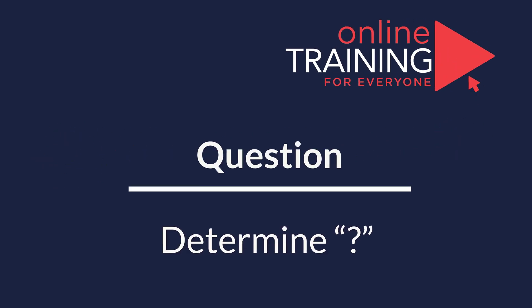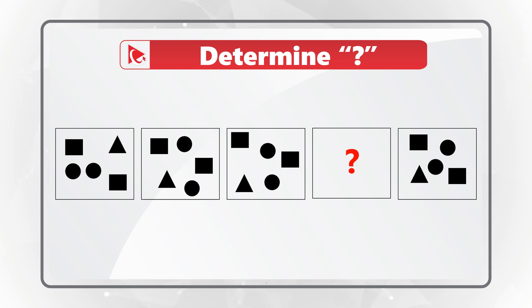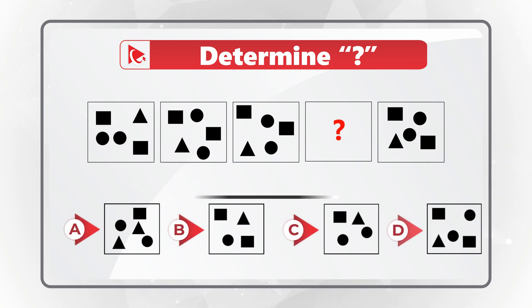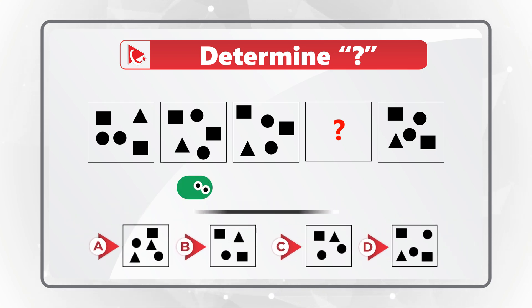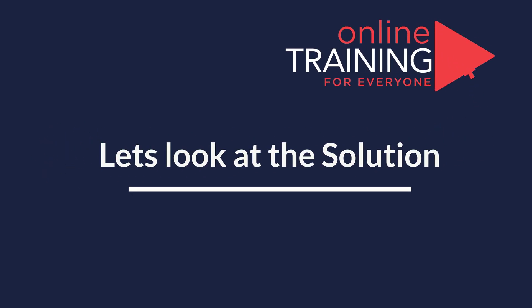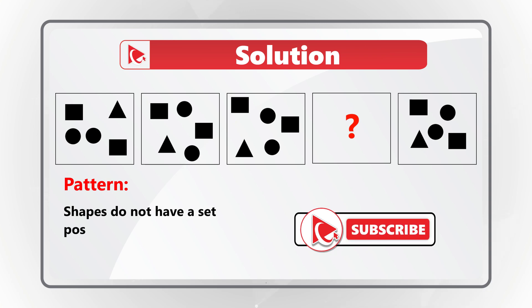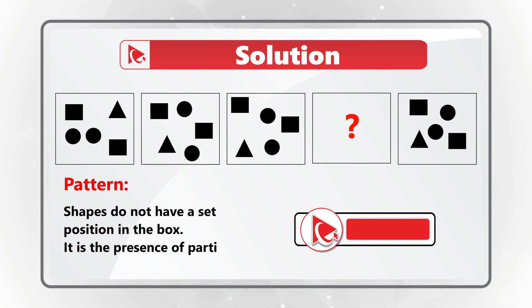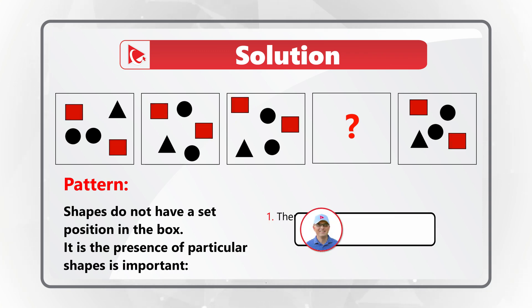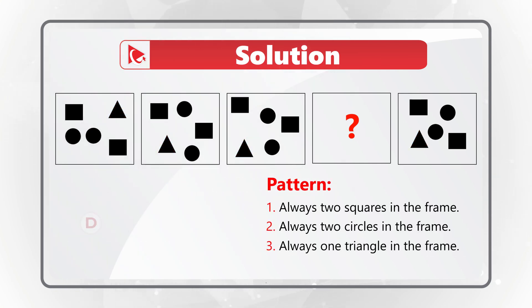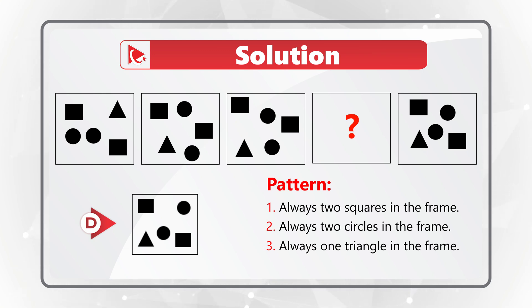Here is an amazing question to determine your pattern recognition skills. You are presented with 5 boxes. Boxes 1, 2, 3, and 5 have smaller shapes inside, and you need to select box number 4 out of 4 different choices — A, B, C, and D. The position of the small shapes inside the large box is not as important, but the presence of the shapes is very important. There are always two squares in the frame, always two circles, and always one triangle. So the correct answer here is choice D.